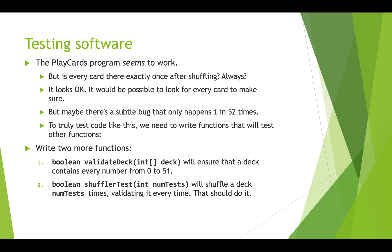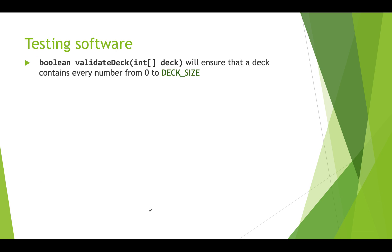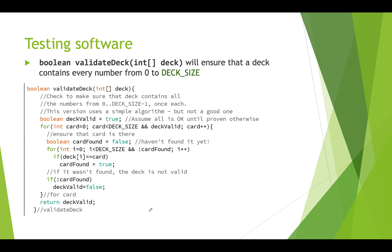Let's take a look at what these functions look like. This code is in shuffletest.pde. The code uses a bigger deck and doesn't display the cards. Here's our validate deck function — we're passing in the deck and going through to check that every card number from zero up to deck size is in the deck, returning true if it is and false otherwise. First we create a boolean variable called deck_valid and start by assuming it's true. This structure allows us to have just one return call at the end.